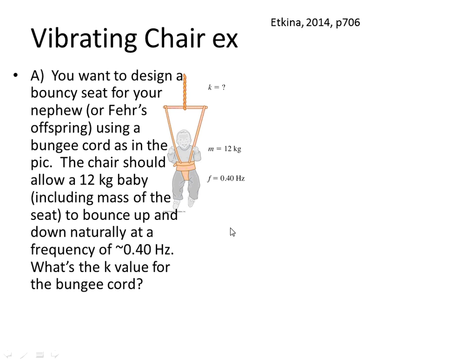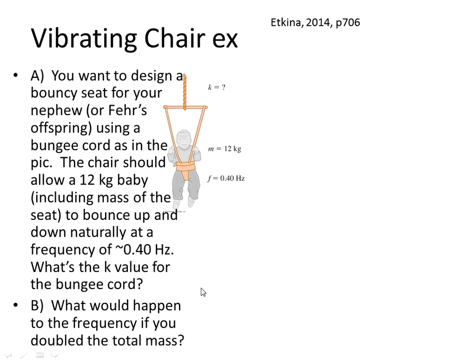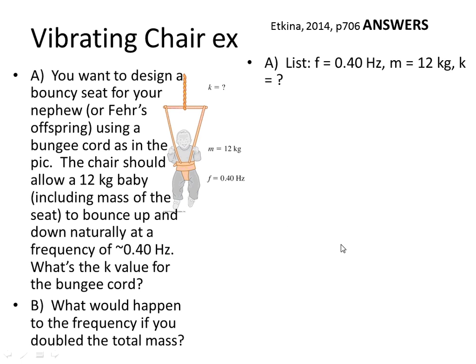Here we have a vibrating bouncy chair — one of those bouncy seats for kids. You've got a bungee cord up top and a mass of 12 kilograms that's going to bounce at a given frequency. Calculate the k value for the bungee cord. List out variables: we have frequency, we have mass, and we're looking for k.